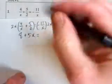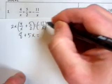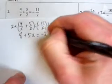On the right-hand side, the 2x times the negative 11 over x, the x is reduced to 1, and you're left with negative 11 times 2, giving you negative 22.